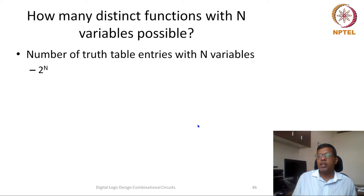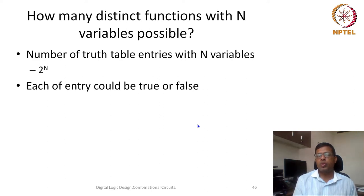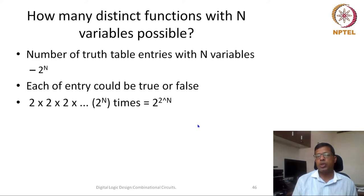In a function, all of these minterms or a particular minterm could be present or could be absent. From that perspective, each minterm could be present or absent in my function, or its output could be true or false. In that way, the total number of possibilities would be 2 × 2 × 2... up to 2^n. So essentially the total number of such possibilities would be 2^(2^n).